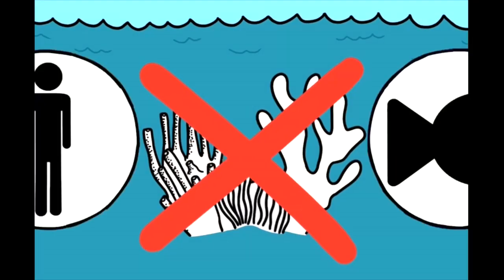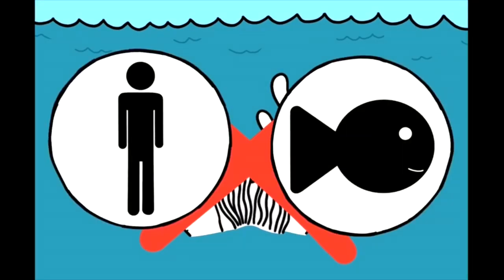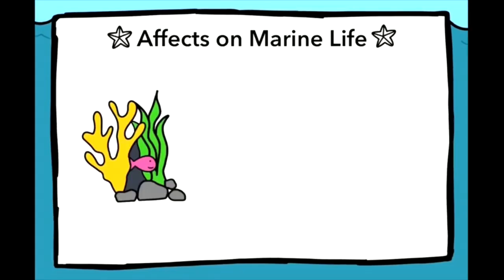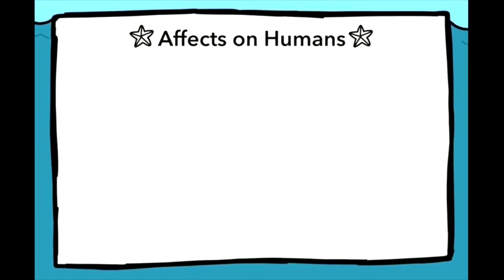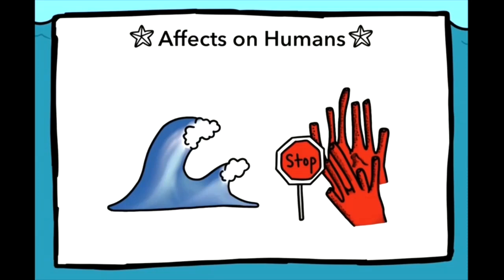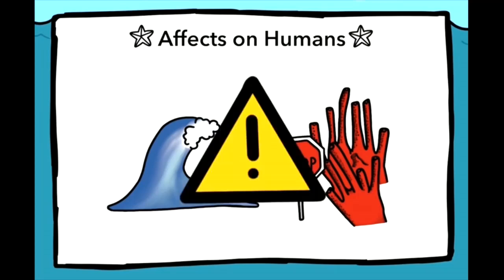As more corals become bleached, it affects both marine life and humans that heavily rely on them. For example, coral reefs provide shelter, spawning grounds, and protection from predators for wildlife and act as a natural barrier that absorbs the force of waves and storm surges keeping humans safe. Without them, they can be put in danger.